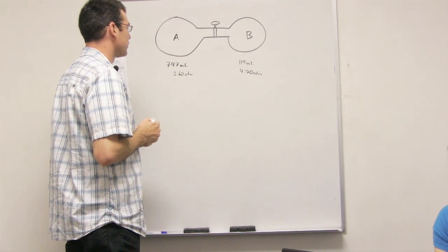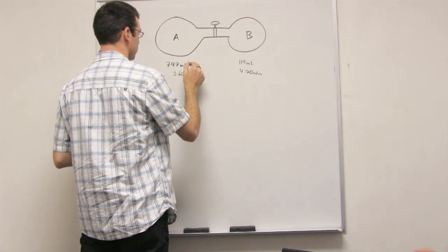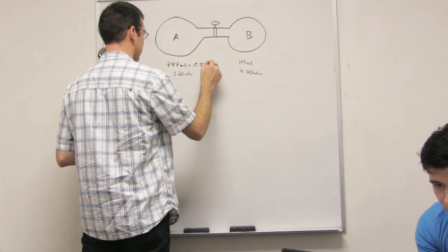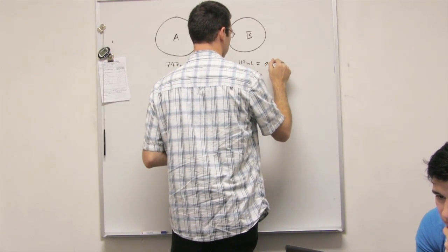There's 747 milliliters. I got it. I was kind of... So 0.747, is it 2-dimensional? Liters. 0.114 liters.